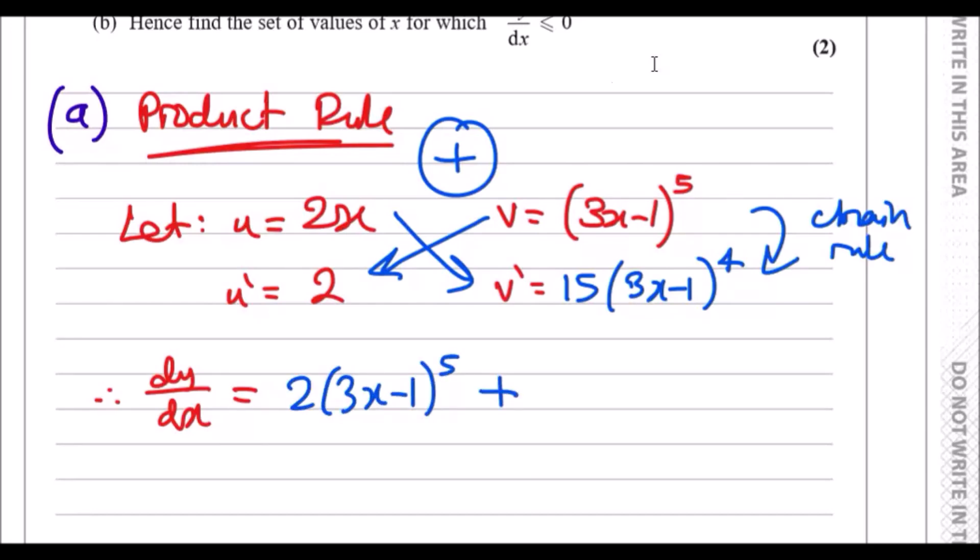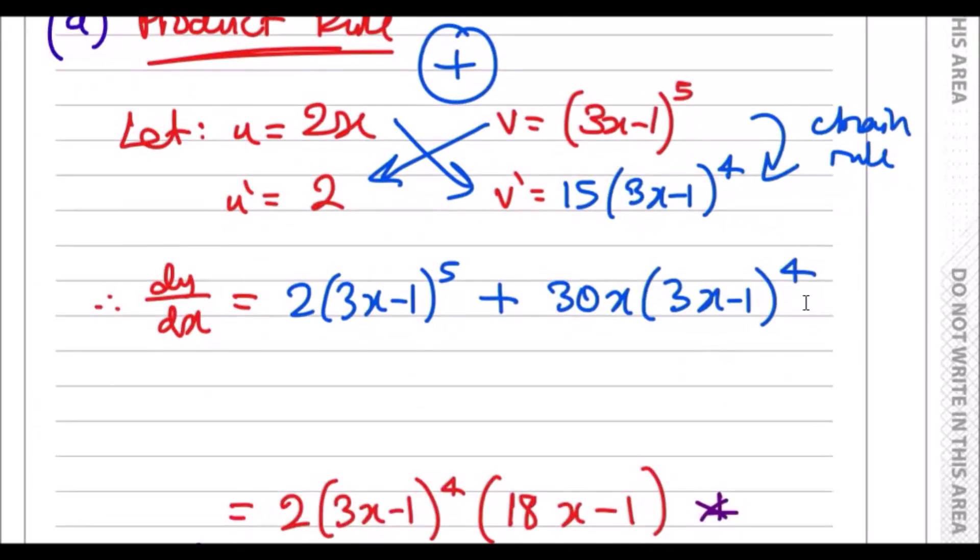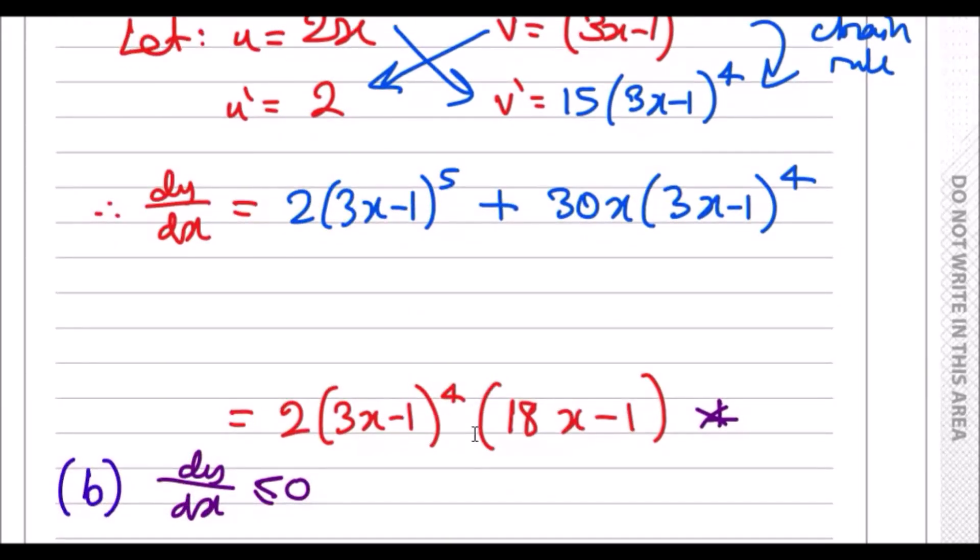Plus u times v': 2x times 15 gives 30x, copy the rest: (3x-1)^4.